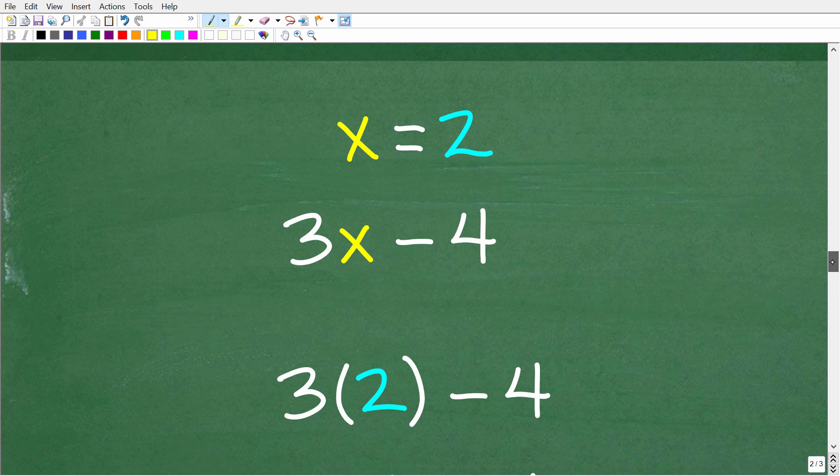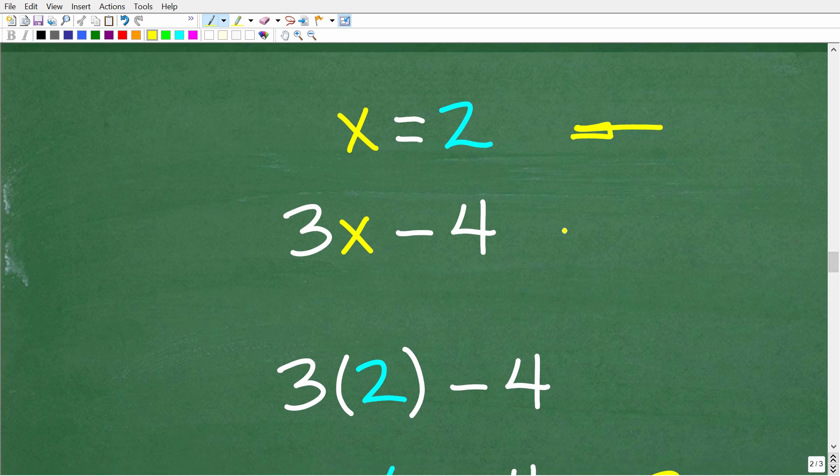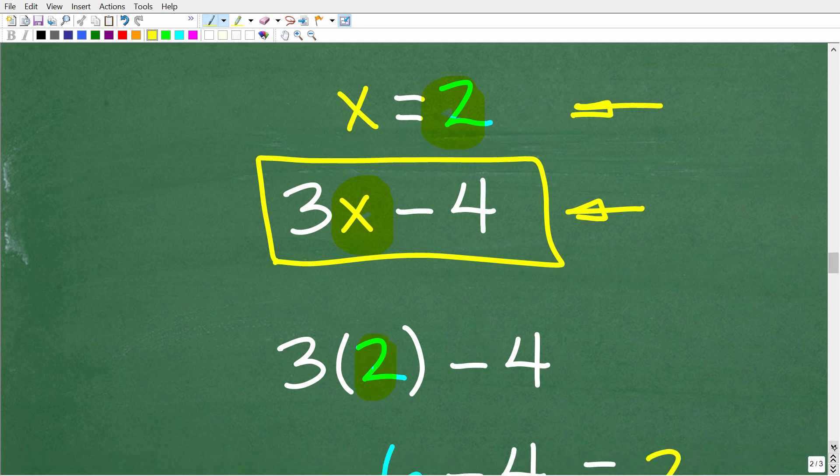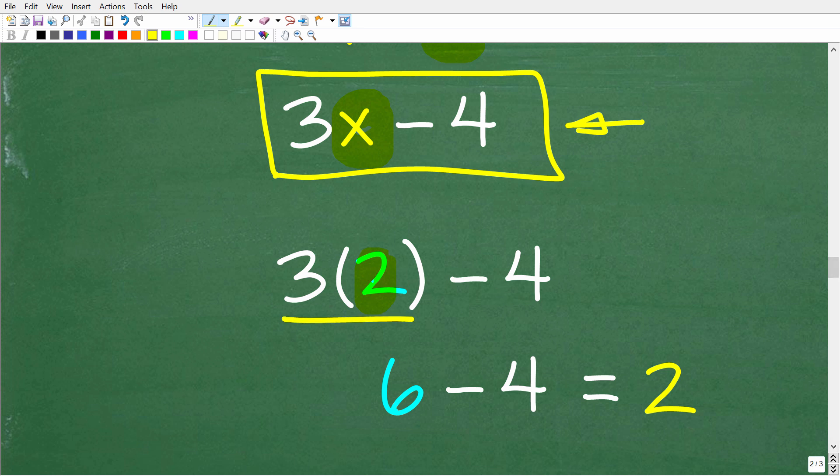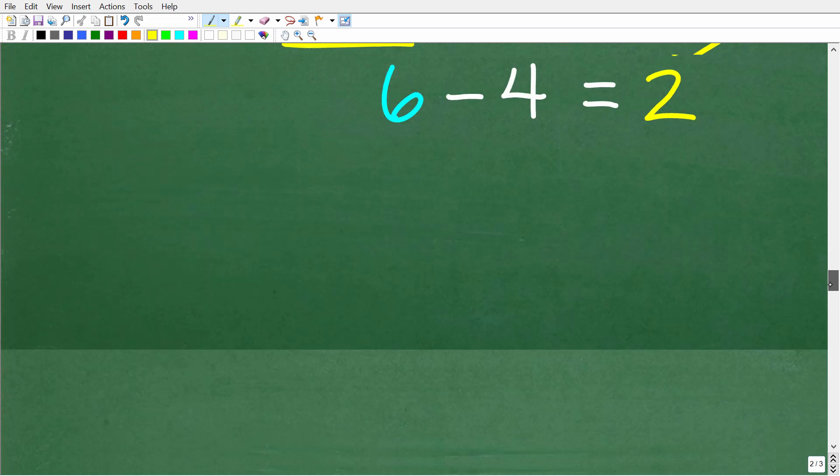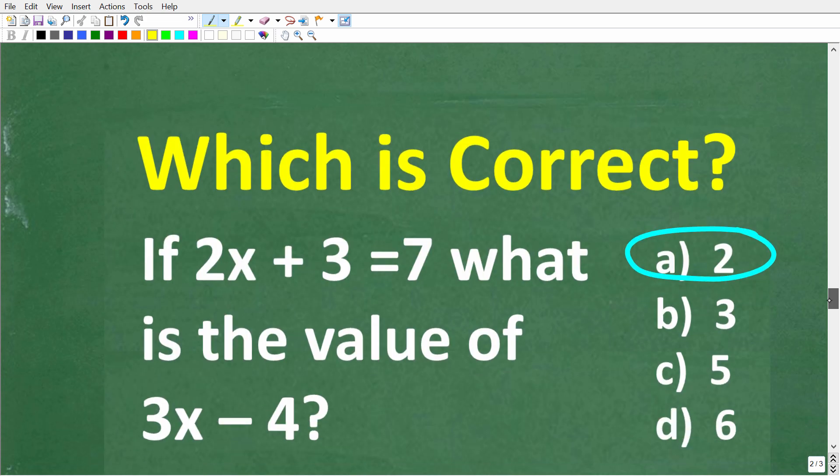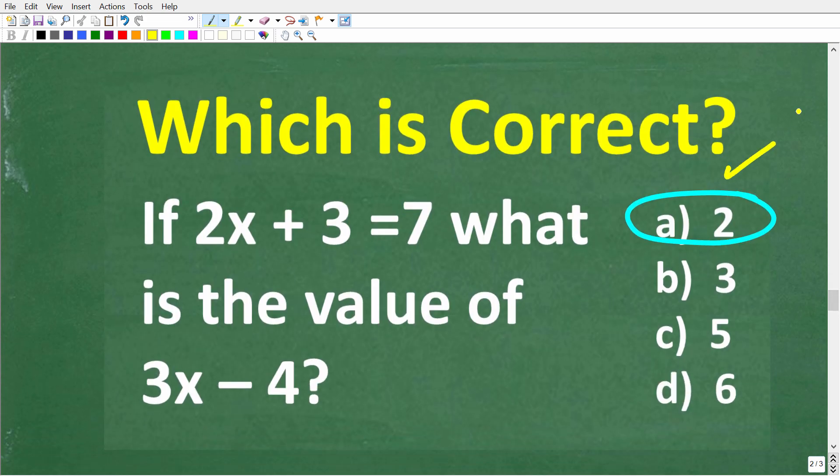All right, so really not much to do here. So now that we know that x is equal to 2, we're trying to figure out the value of 3x minus 4. And this is going to be real easy because we're going to replace this x with 2. So that means that we need to figure out what 3 times 2 minus 4 is equal to. So remember, the order of operations, we need to do multiplication before subtraction. So 3 times 2 is 6. 6 minus 4, of course, is 2. So going back to our multiple choice question here, we need to look for the right answer. And of course, that's A.